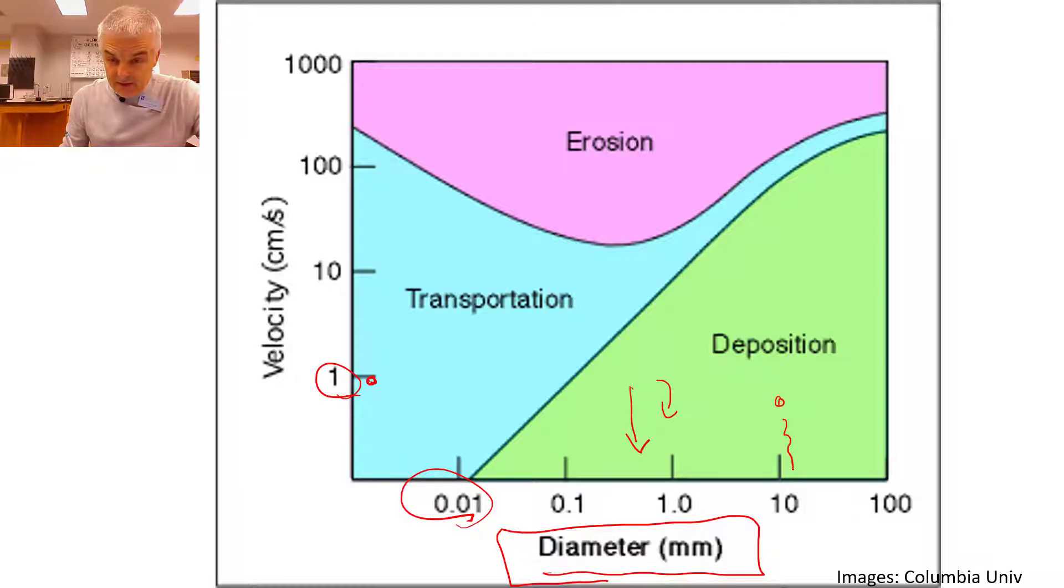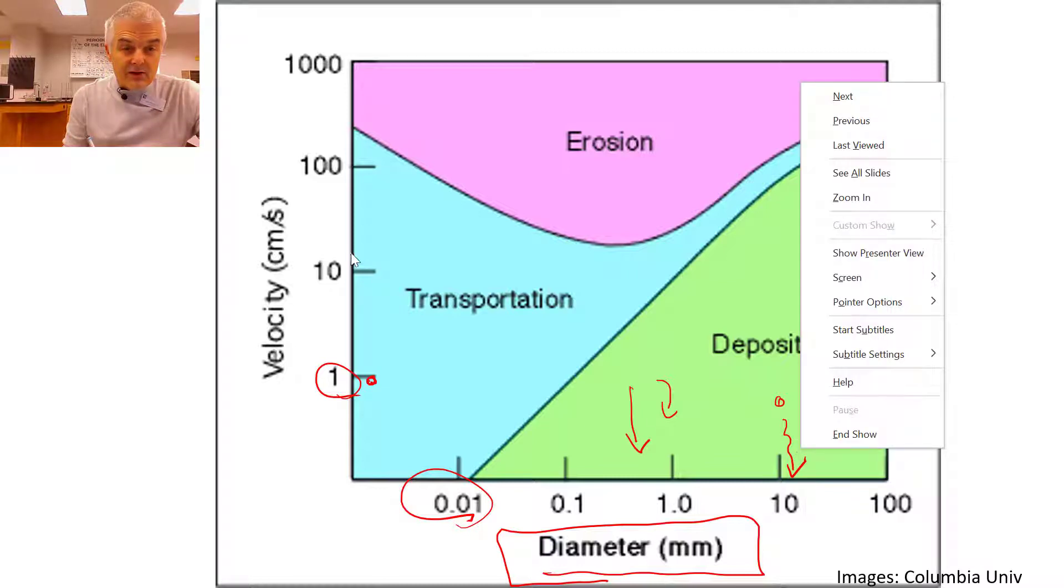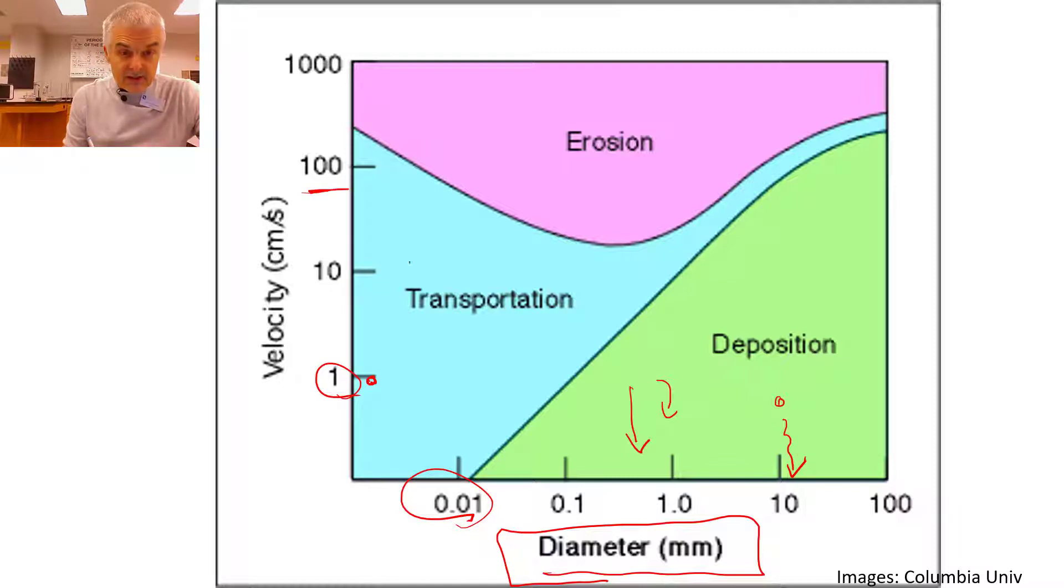So the particles have enough time to settle to the bottom of the river. All right. But if we were to increase the velocity to let's say 100, okay, centimeters per second. Now, the first parts, these are being transported. Okay. The smaller ones are being transported. And then the bigger ones are being eroded. They're being broken off from the side of the river.